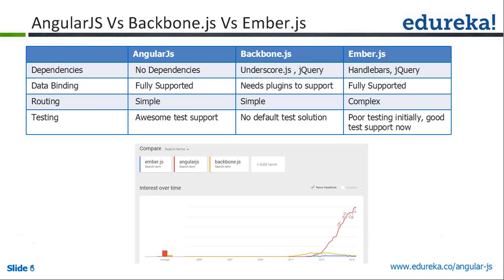What does dependency mean? You should not confuse dependency injection with dependencies. Dependency means that to load a library, you need other JavaScript library dependencies. For example, Bootstrap needs jQuery, Backbone needs jQuery, and Ember needs Handlebars. But AngularJS does not need any other dependencies.